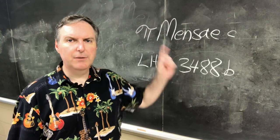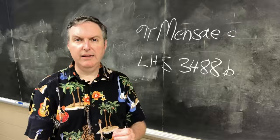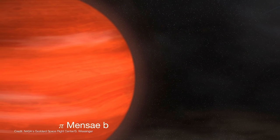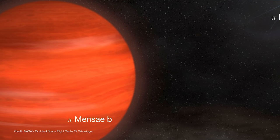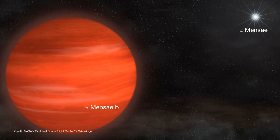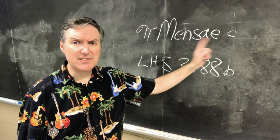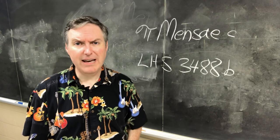The first planet was discovered around the star Pi Mensa. This star is already known to host one planet called Pi Mensa B. Pi Mensa B is a super-Jupiter that takes about 5.7 years on a very elliptical orbit to go around its star. But this new planet, Pi Mensa C, is a very different kind of animal.